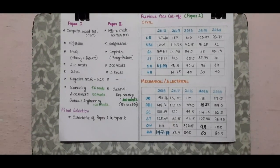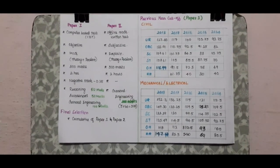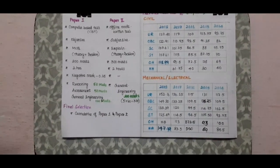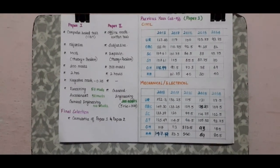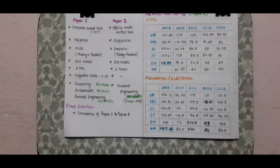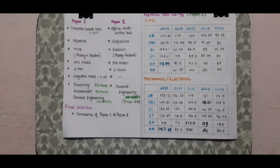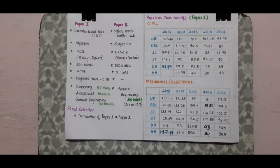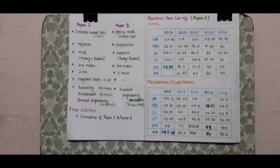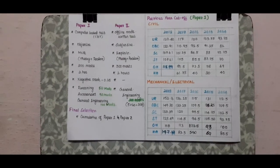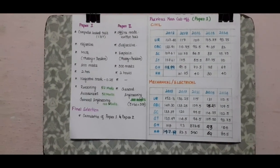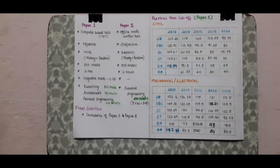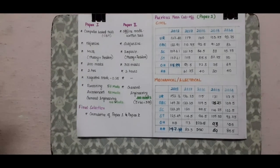Previous year cutoff for Civil: from 2014 to 2018, the 5-year analysis shows that the unreserved cutoff is 127.4 and OBC is 123.91 for the most recent year.